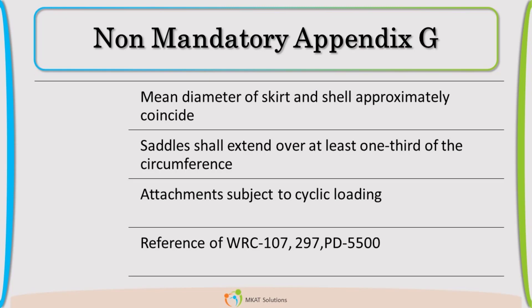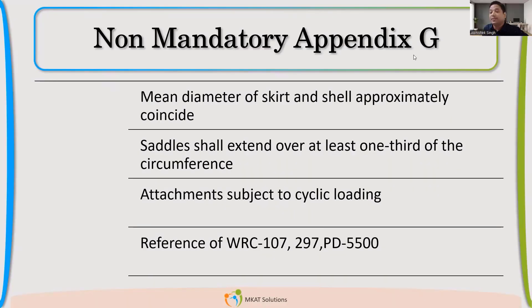Now, let us talk about the Non-mandatory Appendix G. I think you might have not seen these appendixes. If you go back to the code, you will find the mention of these appendixes in UG22. Many times we just ignore and don't notice these Non-mandatory Appendixes.